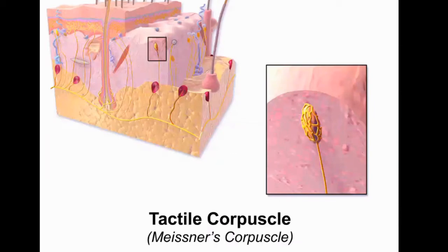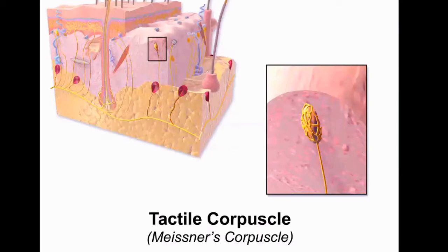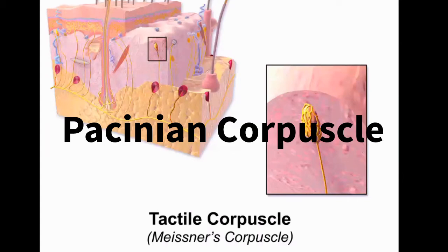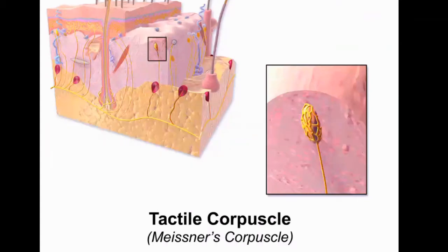This deeper structure here, this red ball, is called a lamellated corpuscle, or a Pacinian corpuscle. These are also sensory receptors found deep within the dermis, and they respond to sensations of deep pressure and high frequency vibrations.